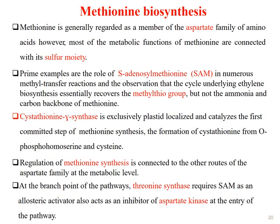Methionine is generally regarded as a member of the aspartate family of amino acids. However, most of the metabolic functions of methionine are connected with its sulfur moiety. A prime example is the role of S-adenosylmethionine (SAM) in numerous methyl transfer reactions, and the observation that the cycle underlying ethylene biosynthesis essentially recovers the methylthio group but not the ammonia and carbon backbone of methionine. Cystathionine synthase is exclusively plastid-localized and catalyzes the first committed step of methionine synthesis: formation of cystathionine from O-phosphohomoserine and cysteine. Regulation of methionine synthesis is connected to other branches of the aspartate family at the metabolic level.